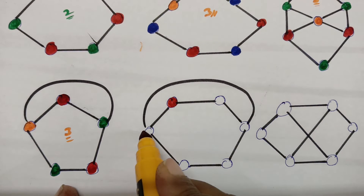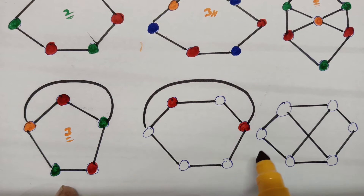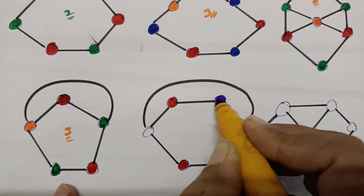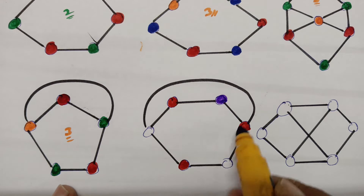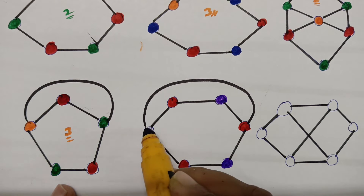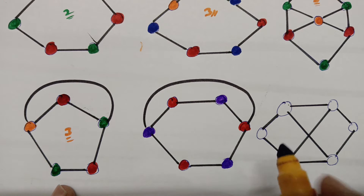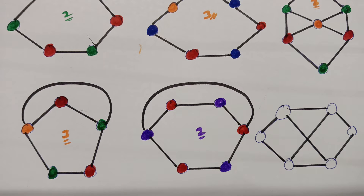For this graph, I start with red and can't use red on adjacent vertices. I reuse red on non-adjacent ones. I then introduce violet, leaving its adjacent vertices. The two color groups cover all vertices without conflict, so the chromatic number here is two.